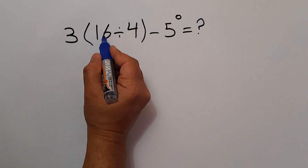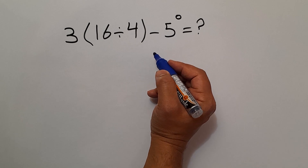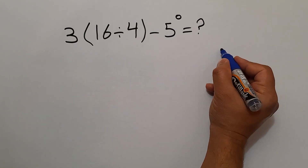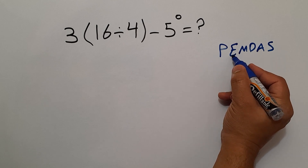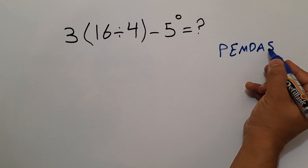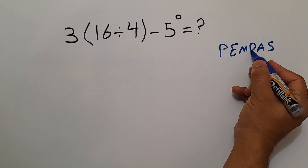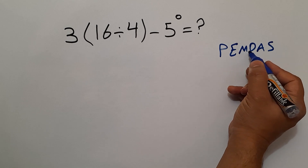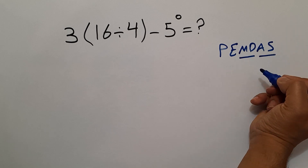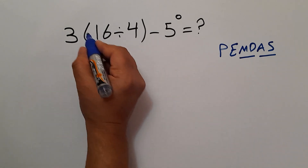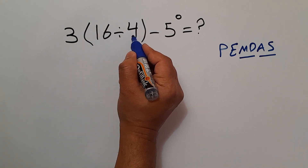Our next problem is: 3 times (16 divided by 4) minus 5 to the power of 0. Are you ready to solve? Let's go ahead and get started. According to PEMDAS — Parentheses, Exponents, Multiplication and Division, Addition and Subtraction — multiplication and division have equal priority and we work left to right; the same applies to addition and subtraction. First we handle the parentheses: 16 divided by 4 gives us 4.